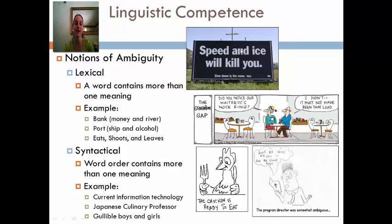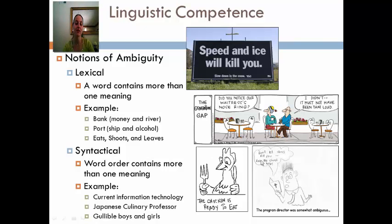So if we look at the first one — 'Speed and ice will kill you' — it is lexically ambiguous because 'speed' can mean two things: velocity or the drug. Or it could also be syntactically ambiguous, because it could mean speed and ice are both going to come and kill you. In the second one, 'did you notice our waitress' nose ring' — this is lexically ambiguous because 'ring' can mean a ring on a finger or a sound. 'The chicken is ready to eat' — none of the words have double meaning; it's the word order that creates ambiguity — the chicken is ready to eat versus we're ready to eat the chicken. So that is syntactically ambiguous. And the last one is syntactically ambiguous because 'let the church help' is ambiguous in terms of either helping you out or killing you.